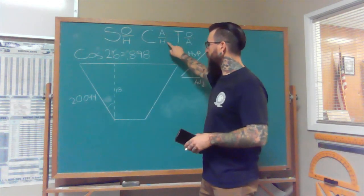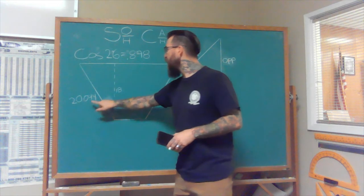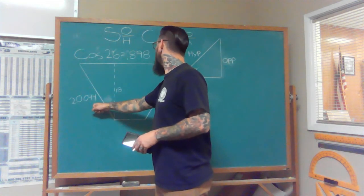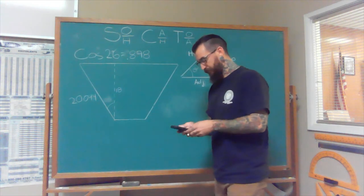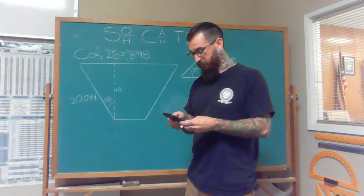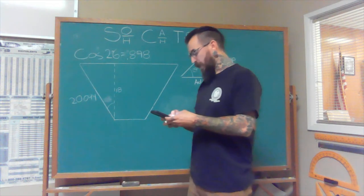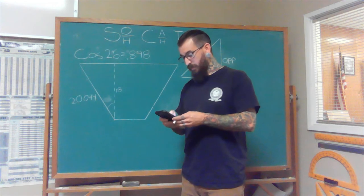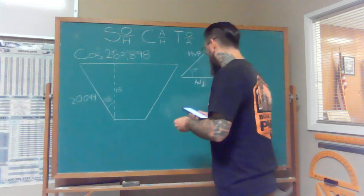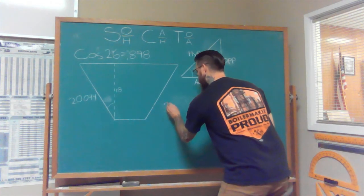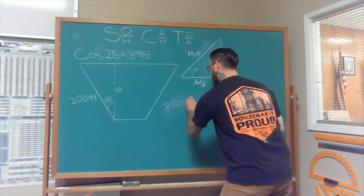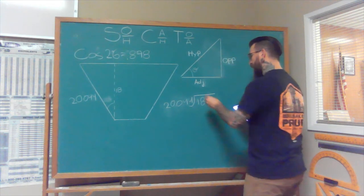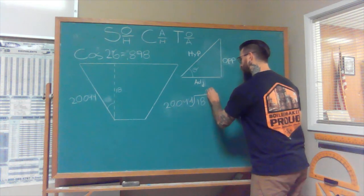So as we already know, we have adjacent and we have hypotenuse. So we know the function we're going to use here is cosine. So if we divided the hypotenuse by the adjacent, it's going to give us a number, our ratio again. So 18 divided by 20.044. And I'll write that out for you. 20.044 dividing 18. And the number we get out of that is 0.898.